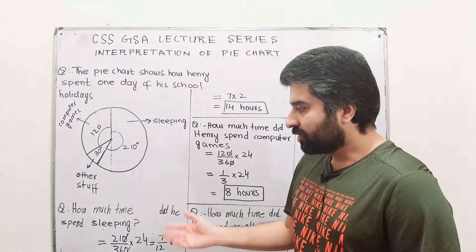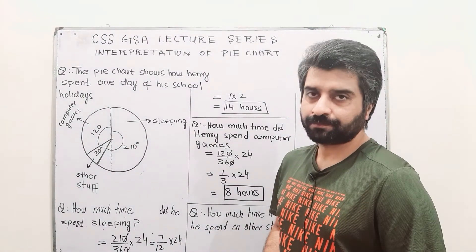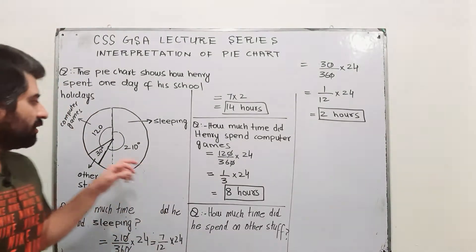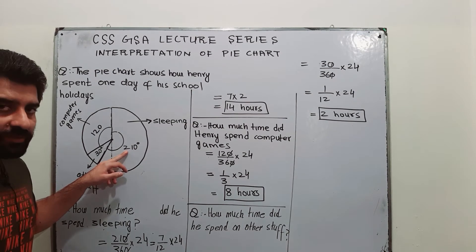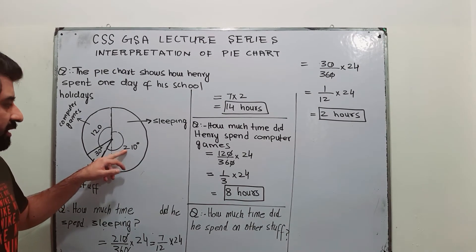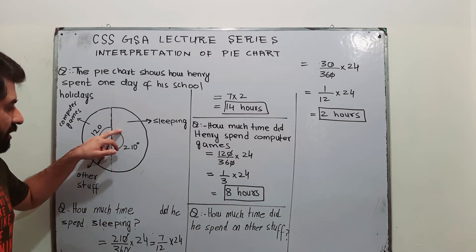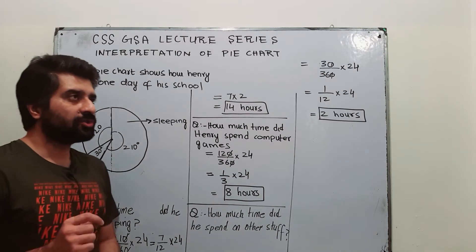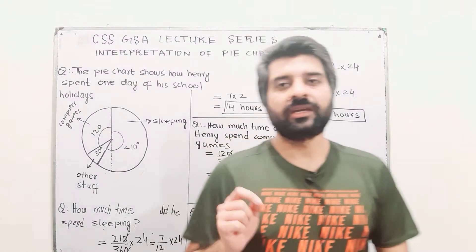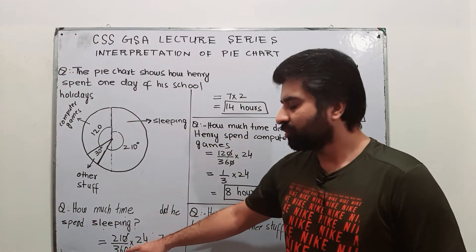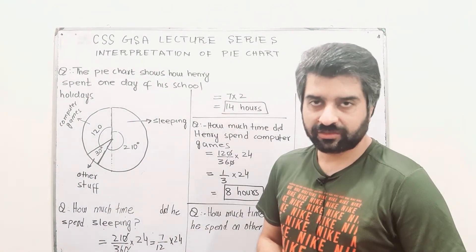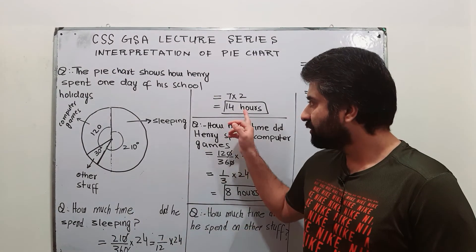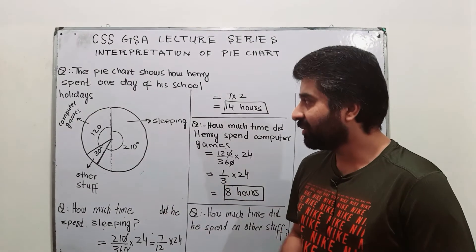The question is: how much time did Henry spend sleeping? If you observe, the sector allocated for sleeping has an angle of 210 degrees. If not given in the paper, you can use a protractor to measure the angle. So: angle for the sector of sleeping divided by total angle in a pie chart (which is 360) multiplied by 24 — the total number of hours in one day. Upon simplification, the answer is 14 hours spent sleeping.